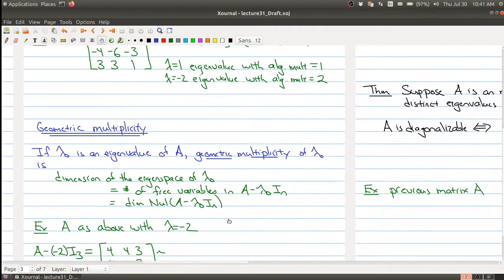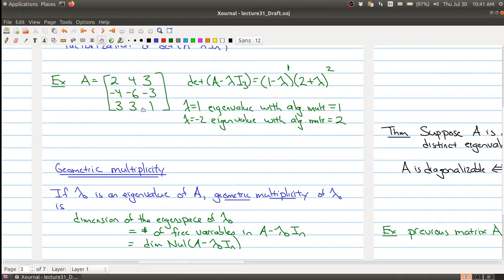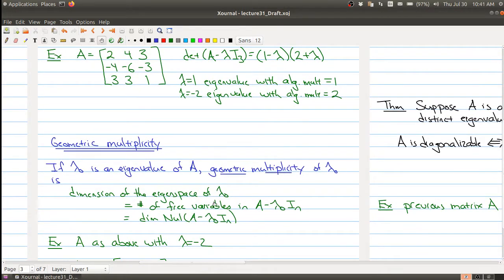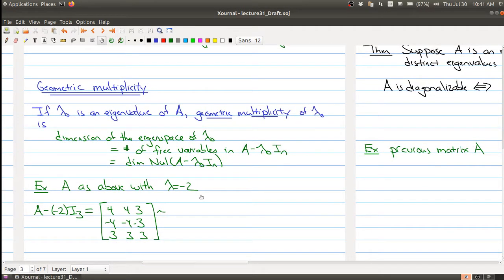So you want to think about both the algebraic multiplicity and the geometric multiplicity are kind of sizes attached to an eigenvalue. So if we took this matrix right here and we have lambda equals negative 2 is an eigenvalue of this, let's try to figure out what the geometric multiplicity is. So I already did the first step. I put A minus negative 2 I3 and here's my matrix. And I see that the first row is a multiple of the second row.